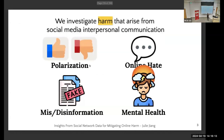Some of the problems we are trying to solve are harms that arise from interpersonal social media communication — for example, polarization, online hate speech, misinformation or disinformation, coordinated activity that might harm election integrity, and things that might impact people's mental health online.